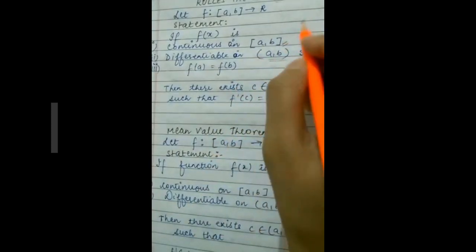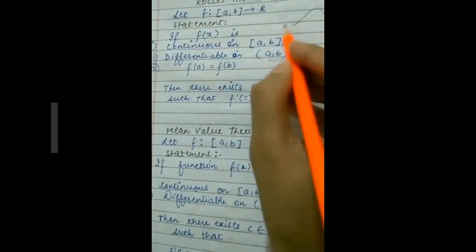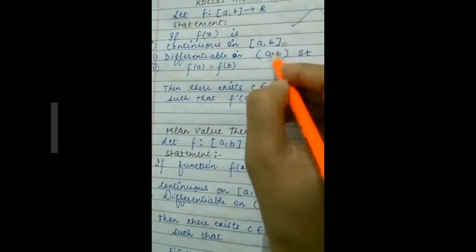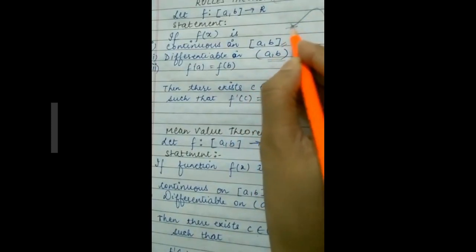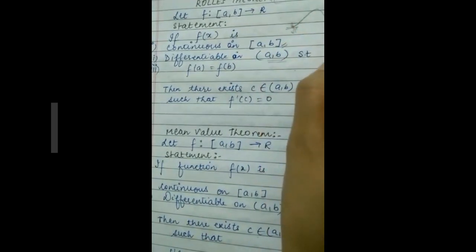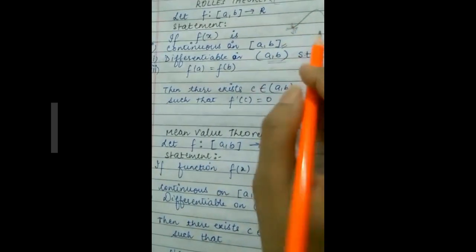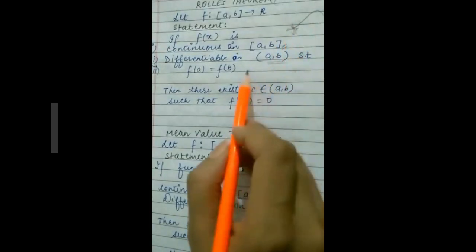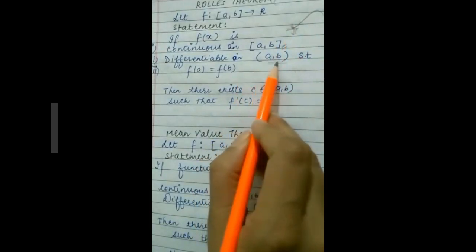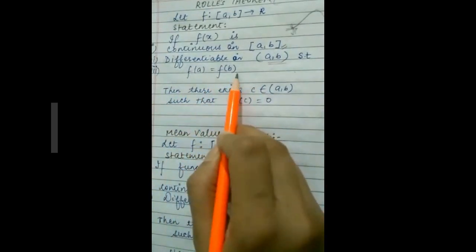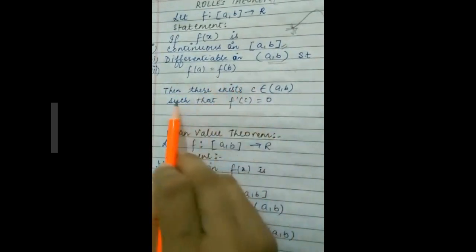We do not include a and b in differentiability because at the endpoints of the curve, we cannot have one unique tangent — there can be multiple tangents at those points. So we consider the open interval for differentiability. The third condition is that f(a) is equal to f(b).